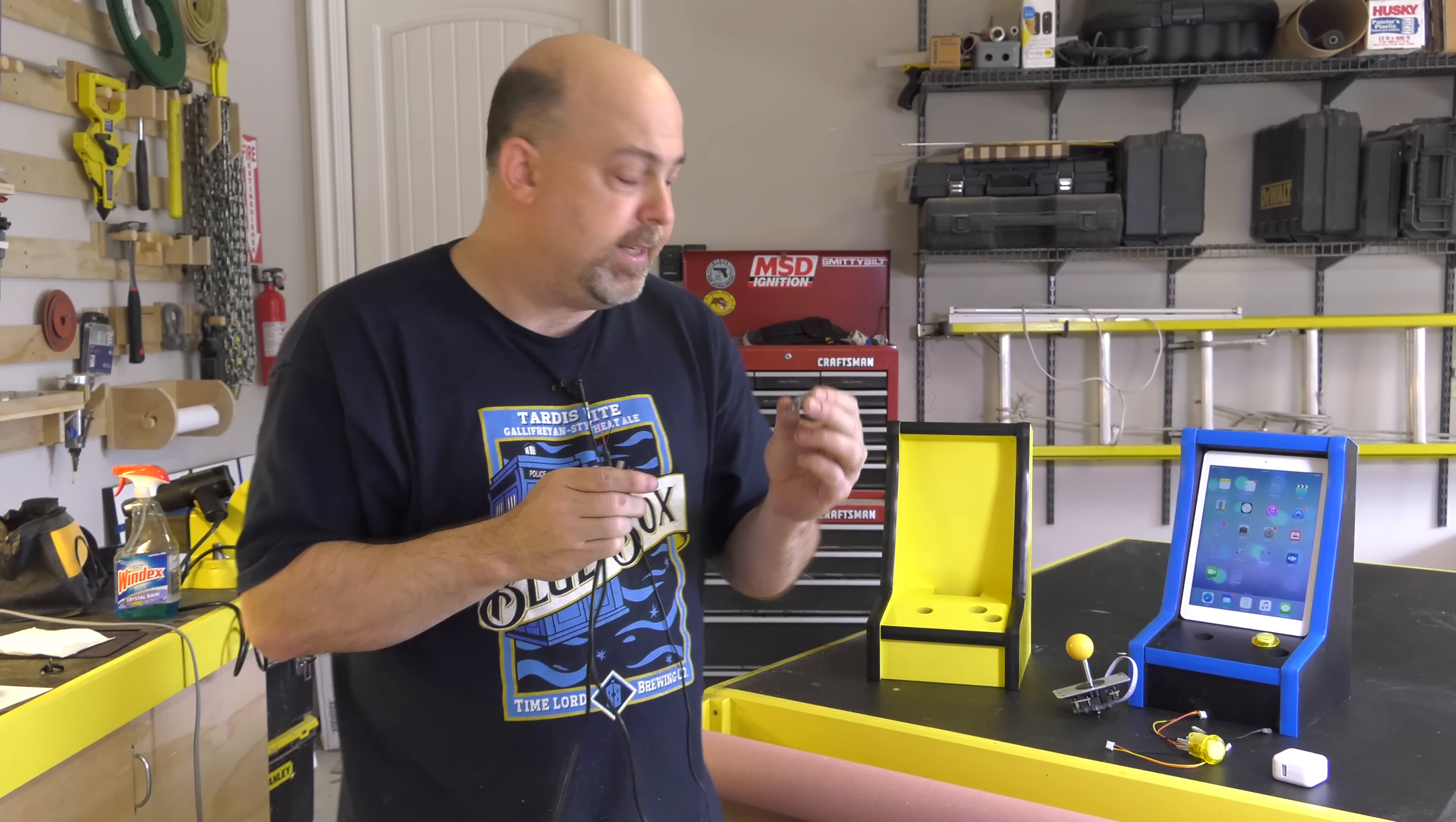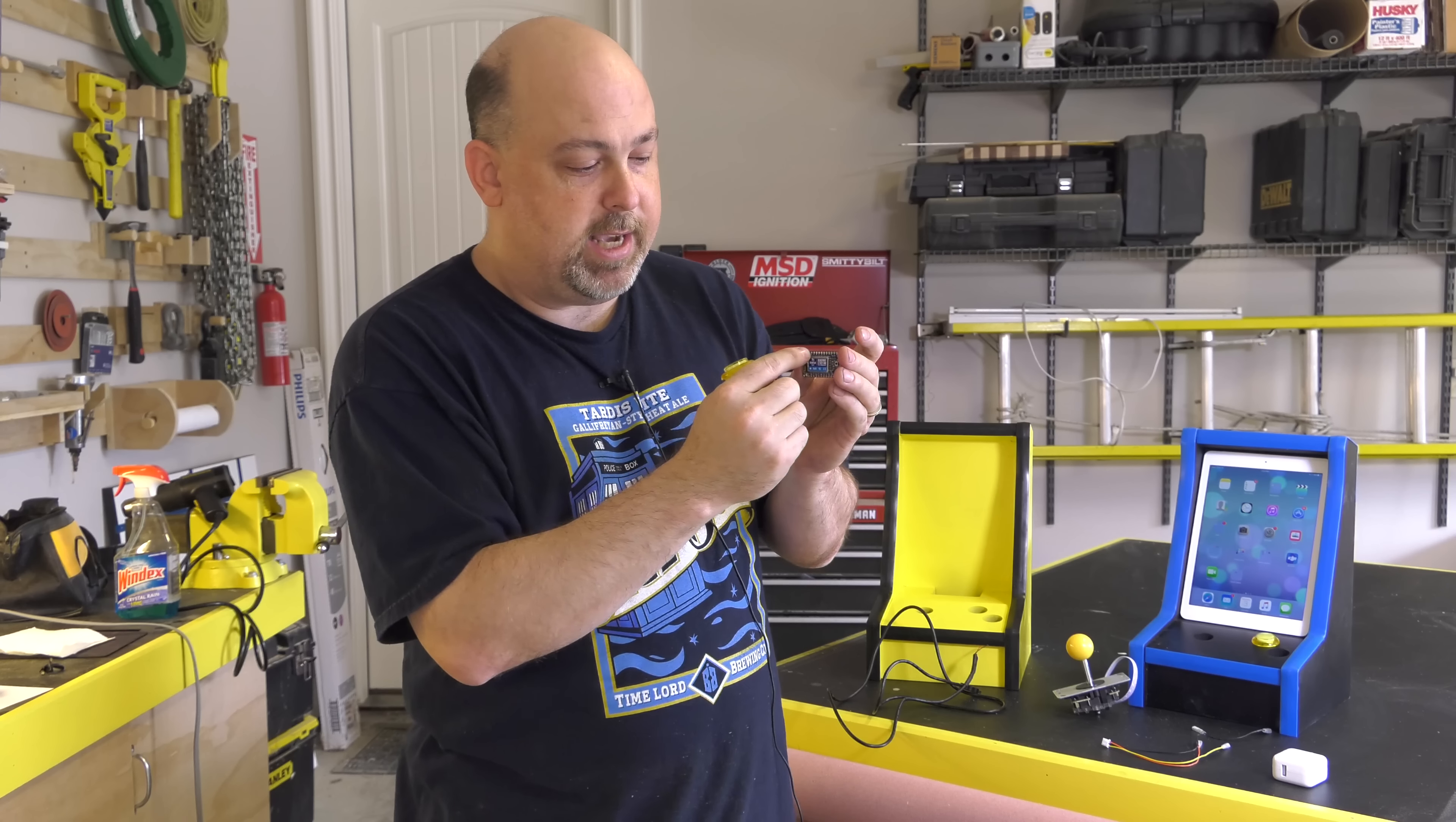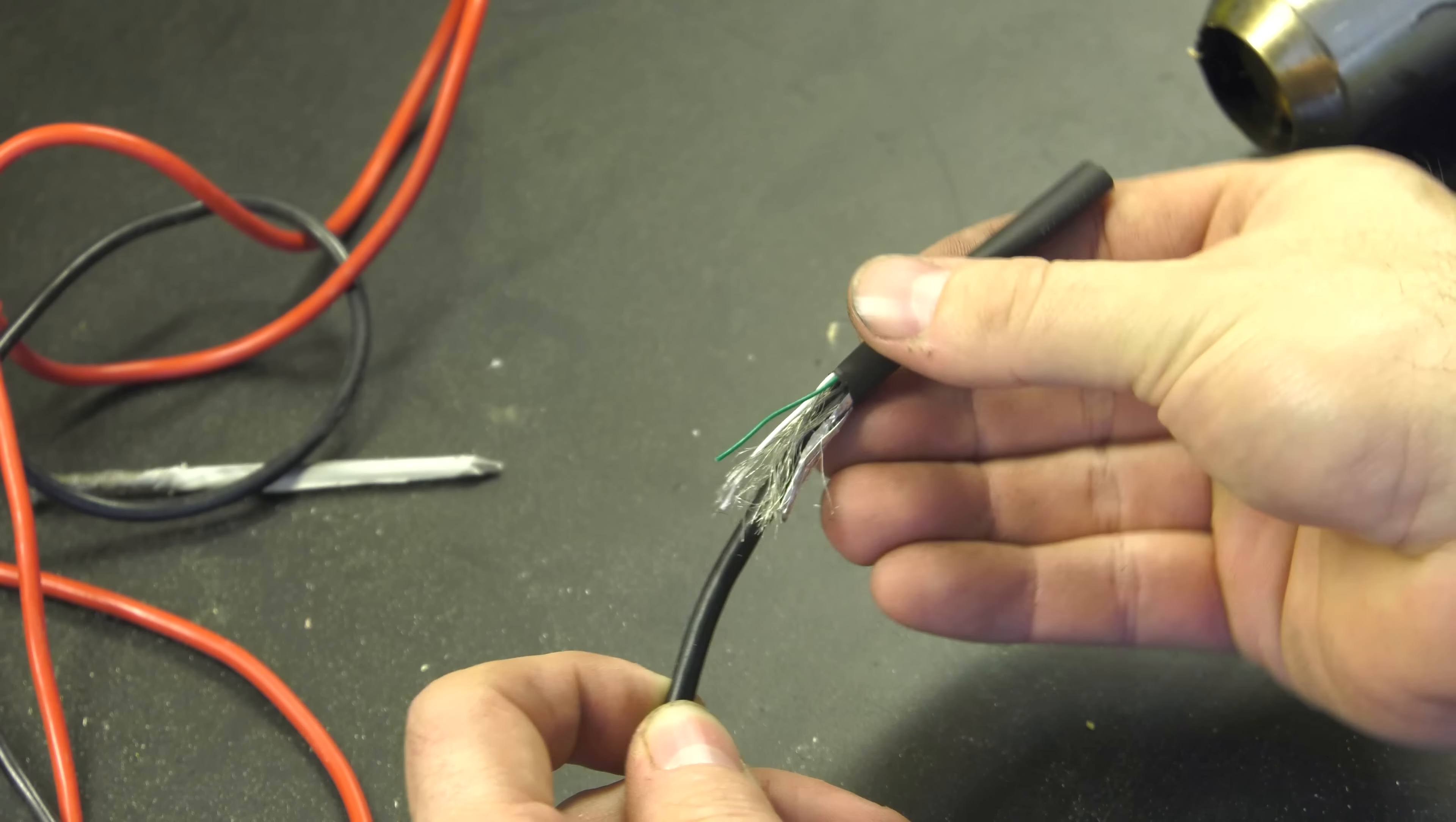On the top row of this Bluetooth module is a section for plugging in keys on a keyboard. This is really fantastic because we're going to plug the wires from our buttons and our joysticks into these modules across the top. That will allow us to control the iPad and play video games using these buttons over Bluetooth.